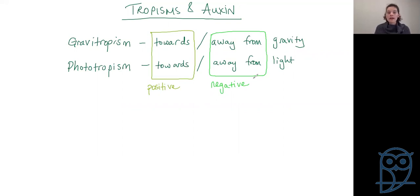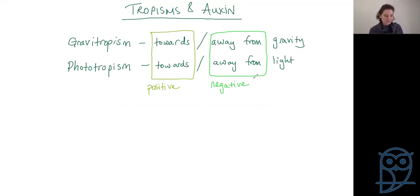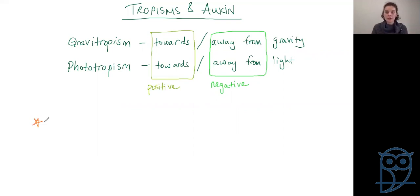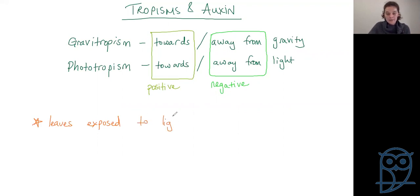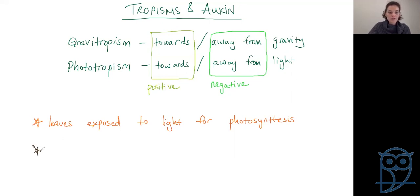Roots grow with positive gravitropism and negative phototropism. You can see now how we get control — shoots growing upwards and roots growing down where they should be. Leaves need to grow up to be exposed to sunlight, because without sunlight exposure we don't get photosynthesis. So we have leaves exposed to light for photosynthesis, and on the other end of the plant we have roots that are penetrating the soil.